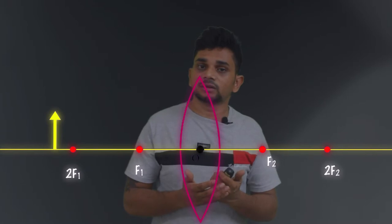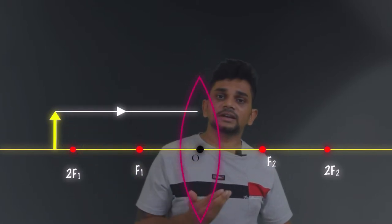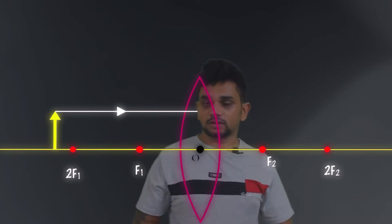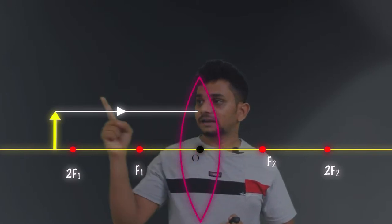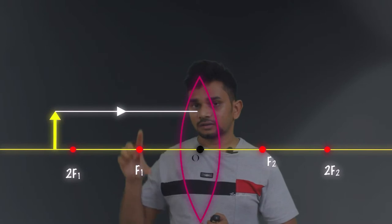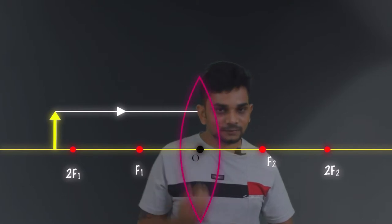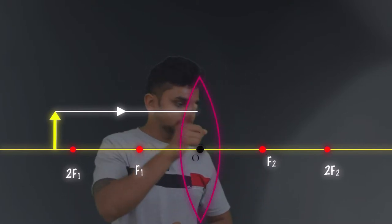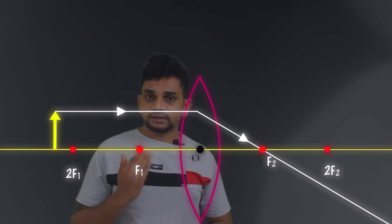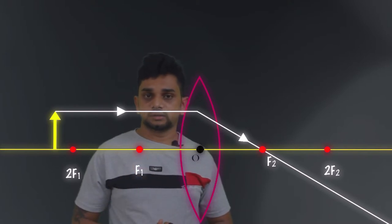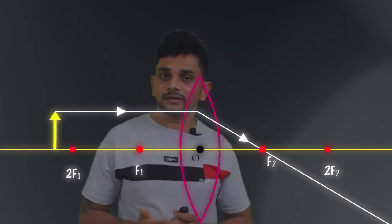The first light ray we are considering is parallel to the principal axis. When the light ray is parallel to the principal axis, after refraction that light ray will pass through the focus F2. Here you can see this light ray is parallel to the principal axis — these two lines are parallel — and after refraction it passes through the focus.